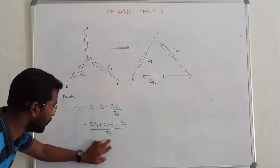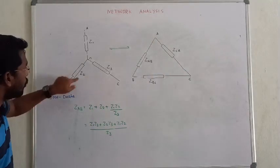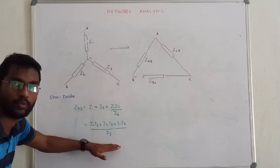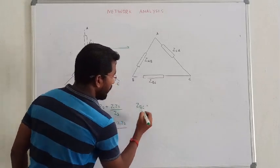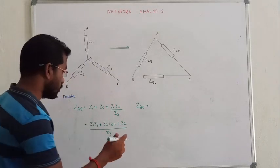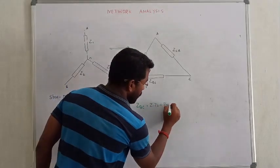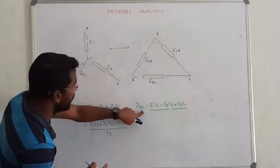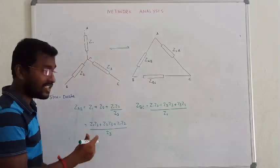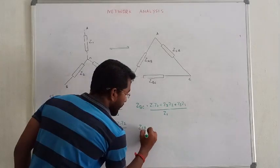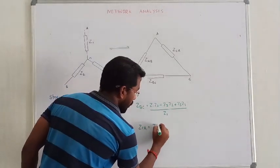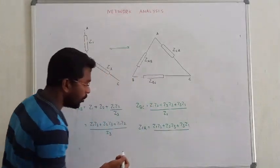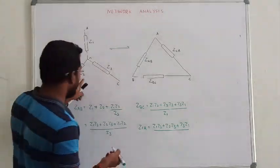There are no changes in the numerator. When we observe the denominator for Z_AB, it is Z3. This combination means Z_BC has the same numerator Z1·Z2 + Z2·Z3 + Z3·Z1, and the denominator is Z1. For Z_CA, the denominator is Z2. That is how we easily find the equivalent delta impedance.